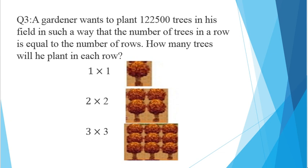A gardener wants to plant 122,500 trees in his field in such a way that the number of trees in a row is equal to the number of rows. So, how many trees will be planted in each row? So, to understand this question, some figures are drawn over there.